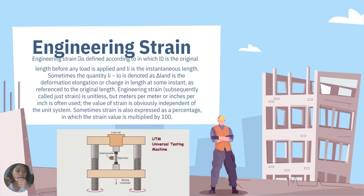Engineering strain is defined according to the formula in which l₀ is the original length before any load is applied and lᵢ is the instantaneous length. Sometimes the quantity lᵢ minus l₀ is denoted as change in length — the deformation elongation at some instant, referenced to the original length. Engineering strain, subsequently called just strain, is unitless, but meters per meter or inches per inch is often used. The value of strain is obviously independent of the unit system. Sometimes strain is also expressed as a percentage, in which the strain value is multiplied by 100.